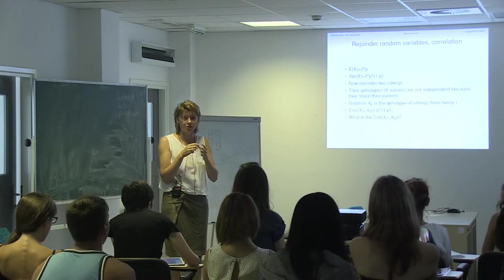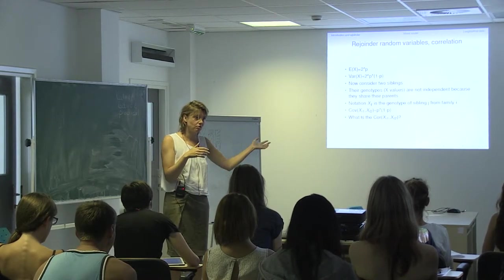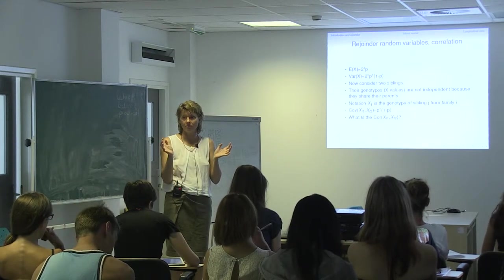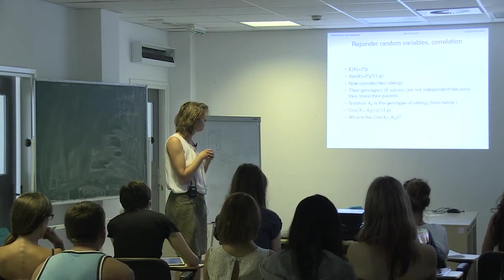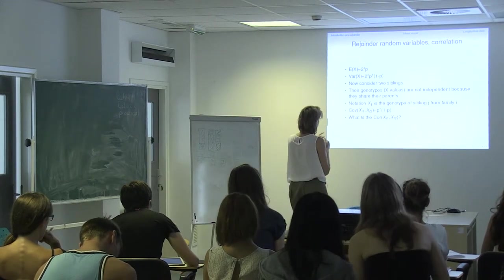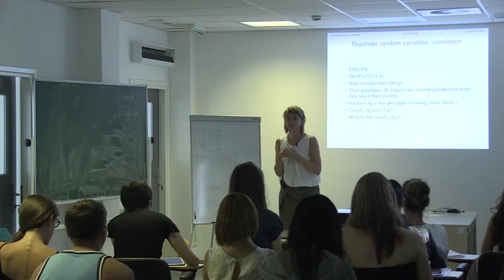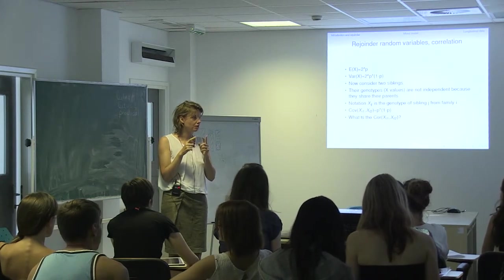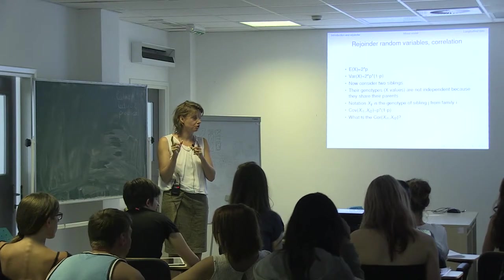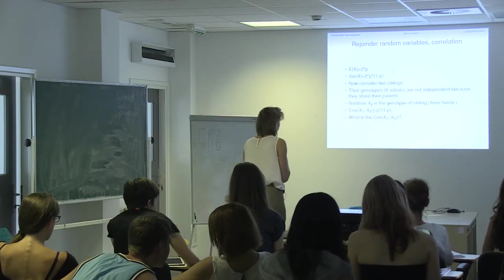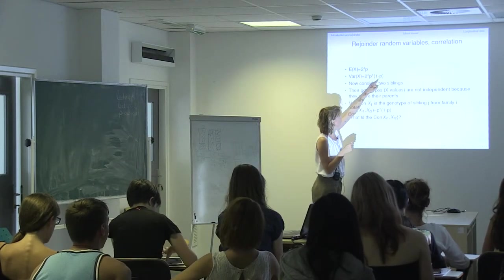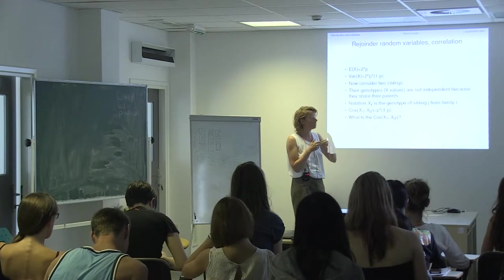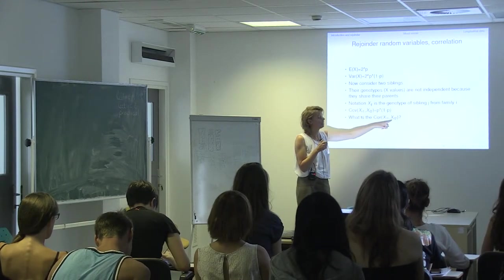We remember that the covariance can go from zero to infinity in either direction, and we used standardization to get a value between minus one and one. How do we go from covariance to correlation? We divide by the standard deviation of X1 and the standard deviation of X2 — their product. So we divide by the standard deviation of X1, which is the square root of the variance, and the standard deviation of X2, which is also the square root of the variance. In this case, we divide by the variance itself.